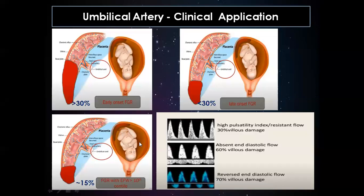If placental damage exceeds 30%, the umbilical artery will be abnormal and the fetus will restrict growth from an early stage, resulting in early onset FGR. If placental damage is less than 30%, the umbilical artery will be normal but growth restriction occurs when demands increase — resulting in late onset FGR. With intermediate damage around 15–20%, the estimated fetal weight may be above the 10th percentile but the fetus may be hypoxic at term.